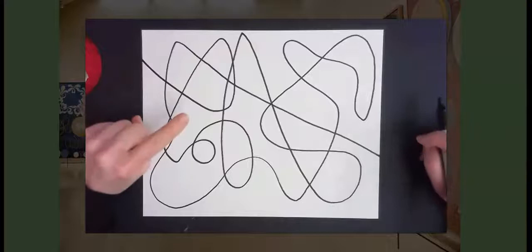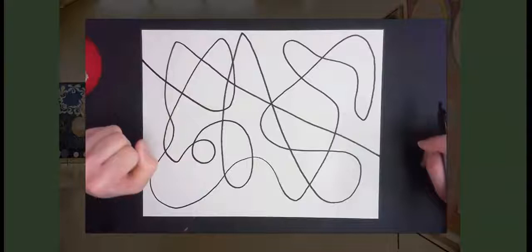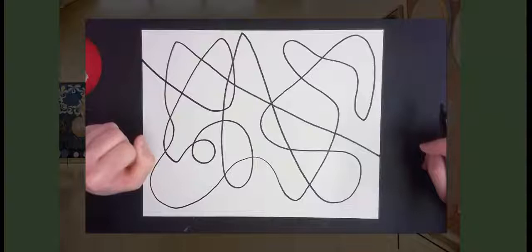Now, the second step, the next thing I'm going to do, I'm going to choose one very simple geometric shape. So my choices are circle, oval, triangle, rectangle, or square.